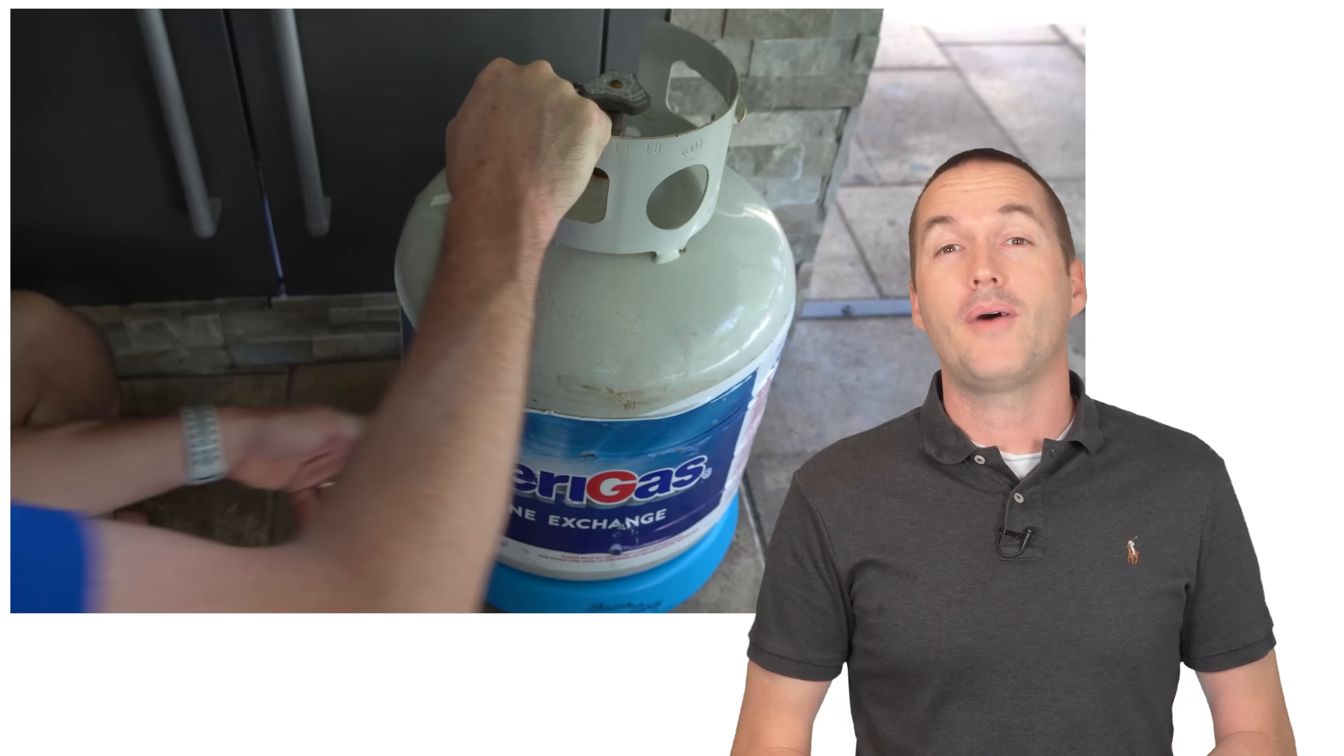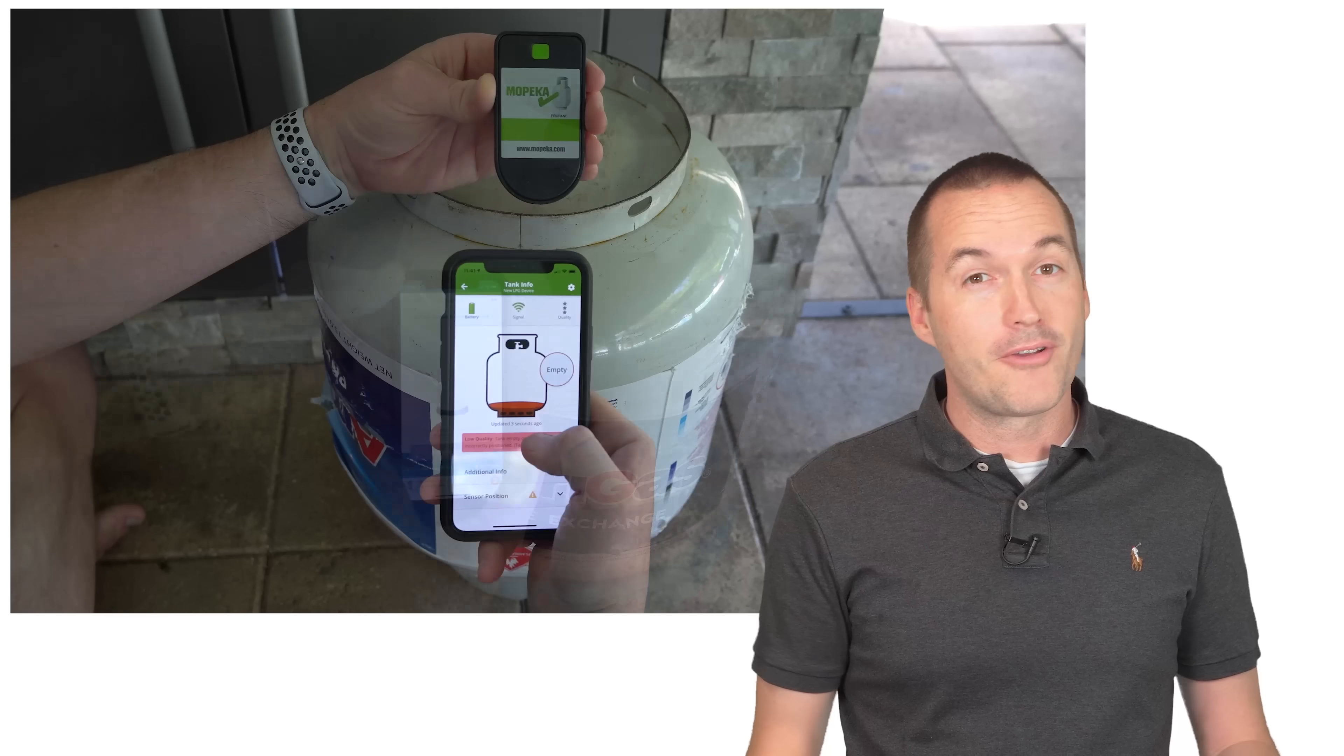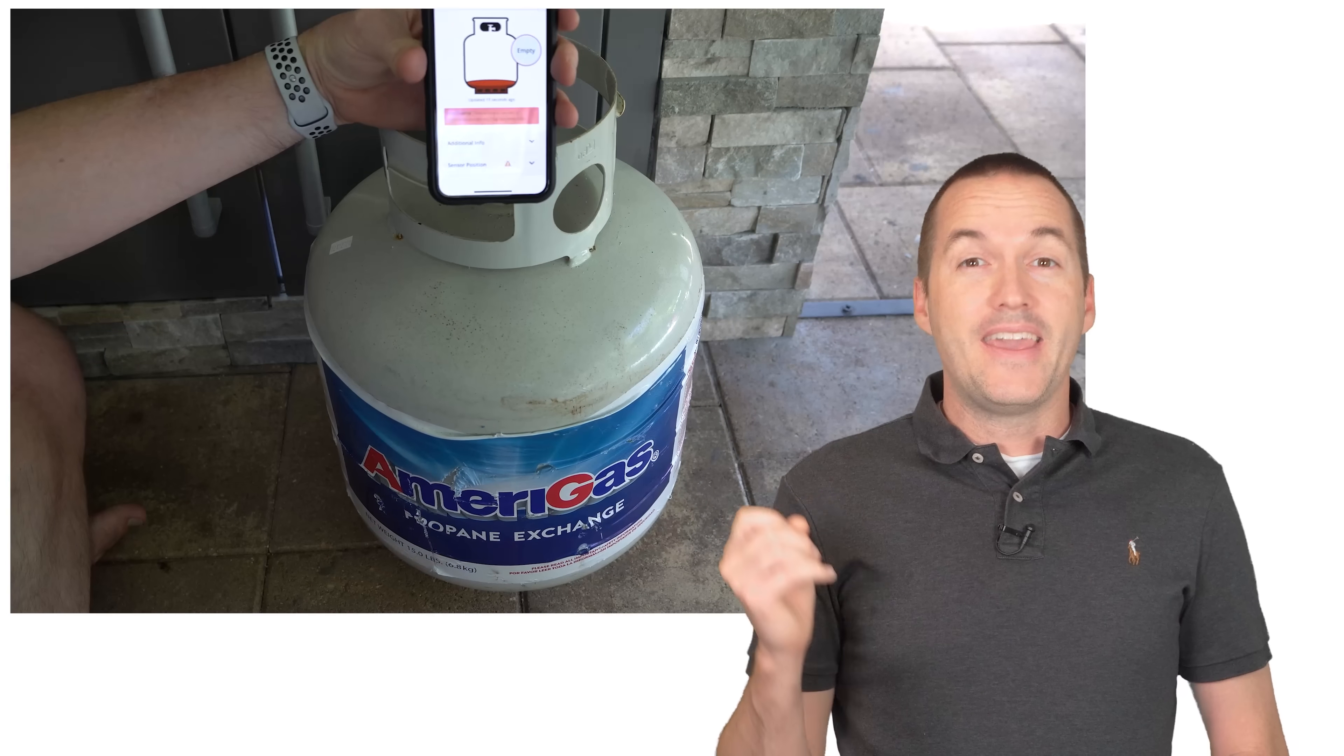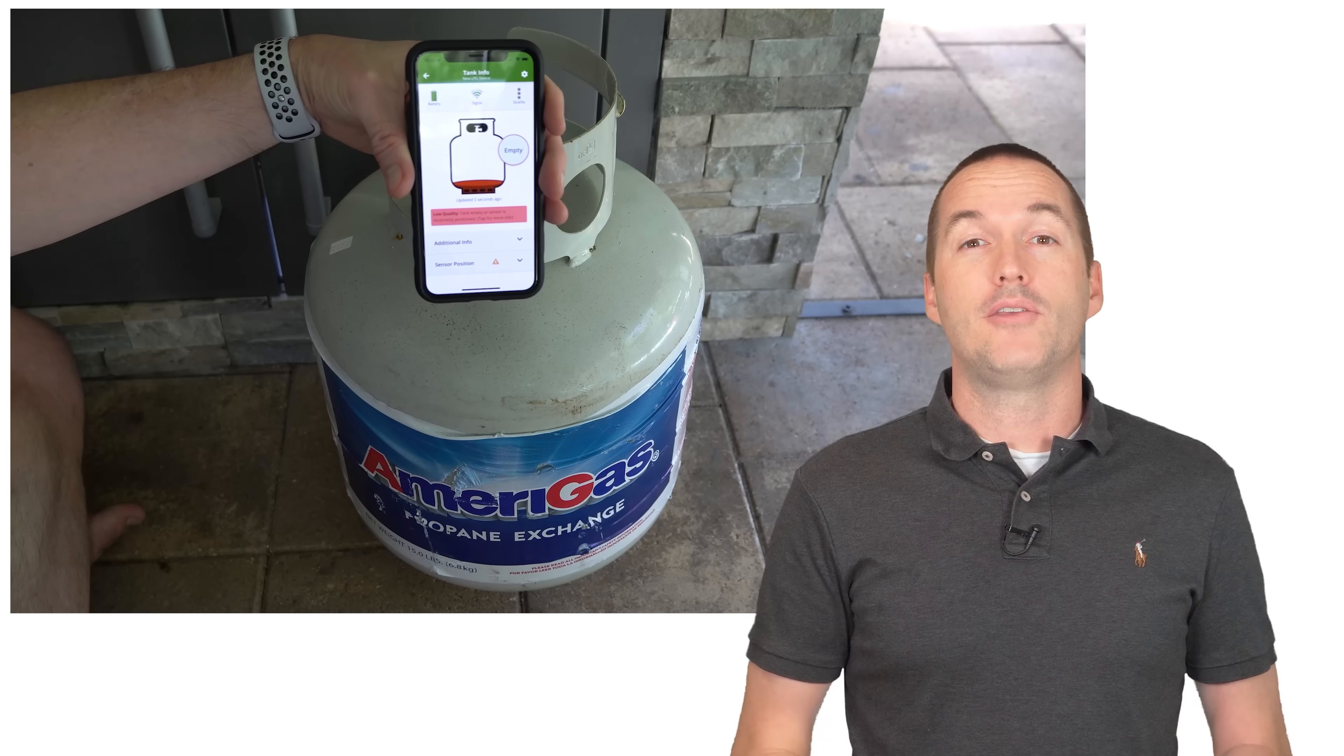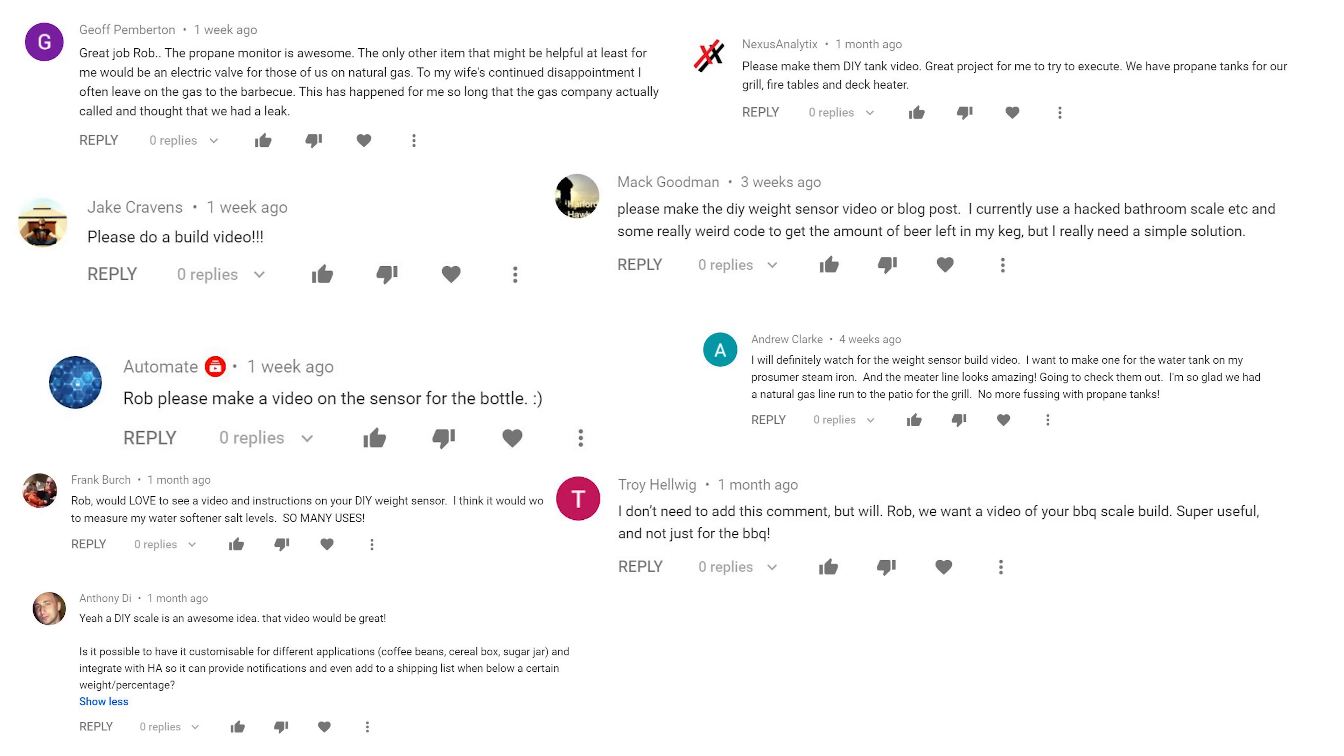A couple of videos ago I tested out some grilling accessories and I was super disappointed that neither of the propane monitors that I tested worked at all. In the end I decided to just say screw it and build my own. Lots of you guys commented that you'd like to see a walkthrough so you could build your own, not just for monitoring propane levels, but also for kegs, CO2 tanks, steam irons, and basically anything else that changes mass as it depletes. So here it is.